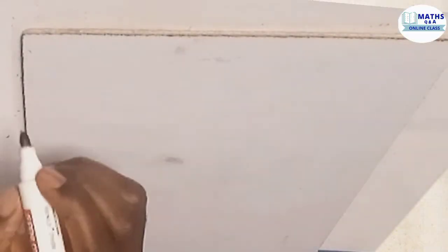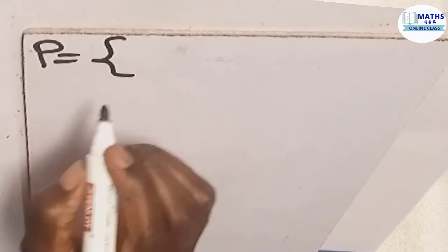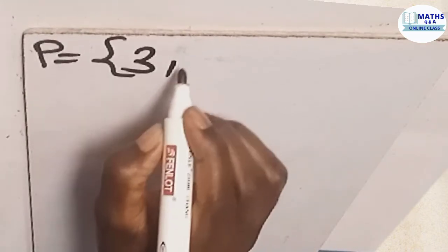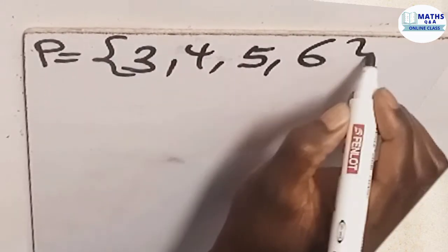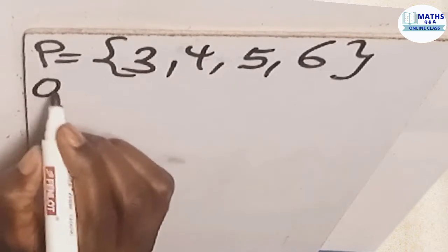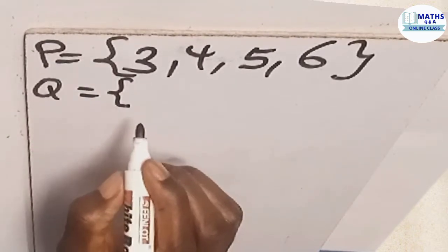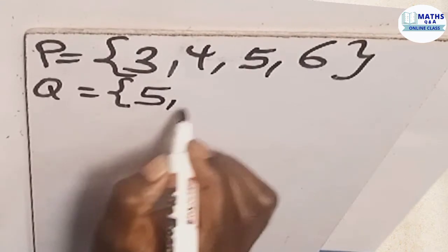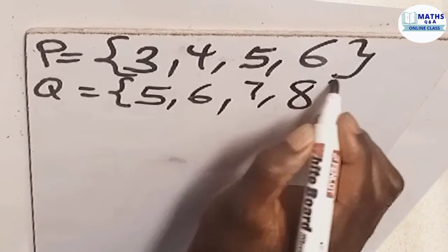We have set P which is having the members 3, 4, 5, and then 6. We are also having set Q given to us and that too has 5, 6, 7, and 8.